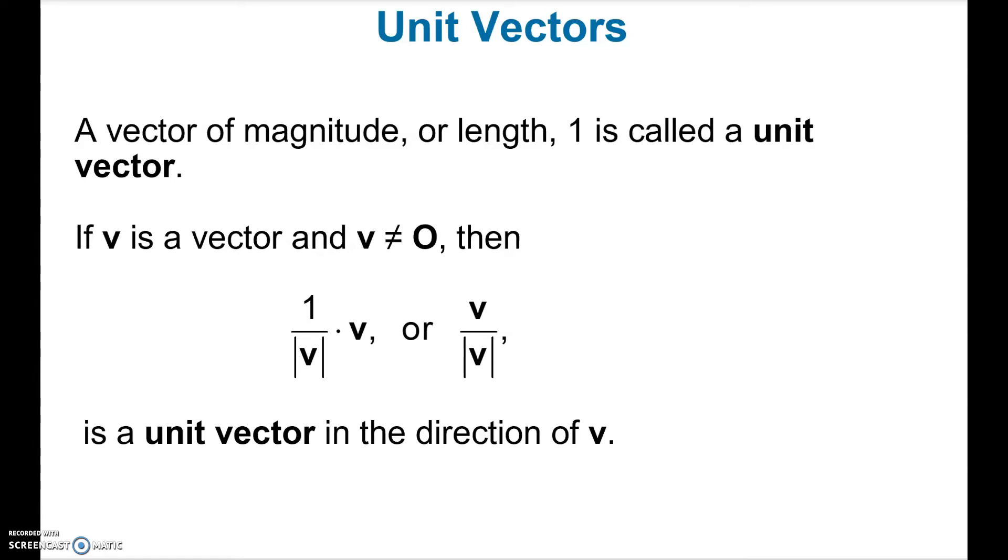So there are just two things we didn't get to in class, and that's unit vectors and the trig form of a vector. Unit vectors is pretty straightforward. By the way, this is the zero vector. We need a zero unit like we do with numbers. If we don't have anything, the zero vector, of course, would be this guy.